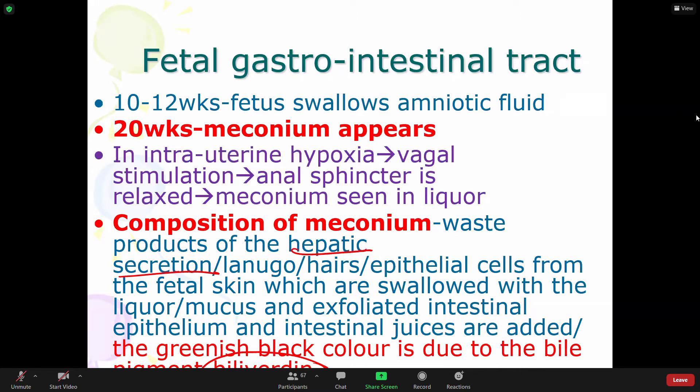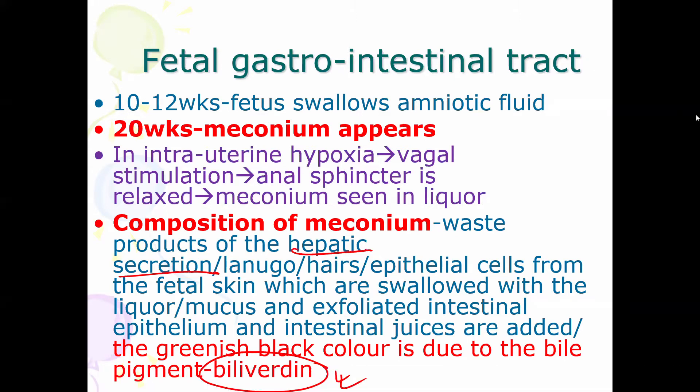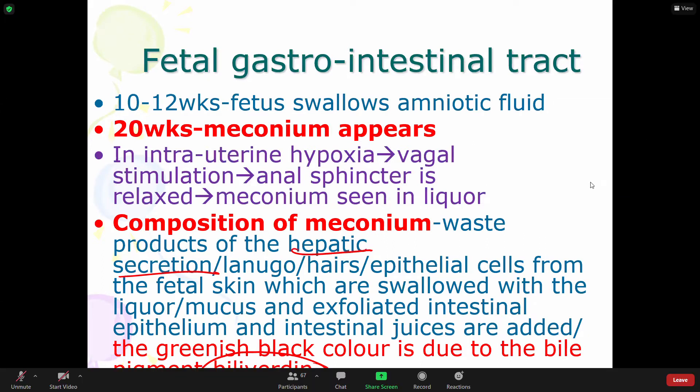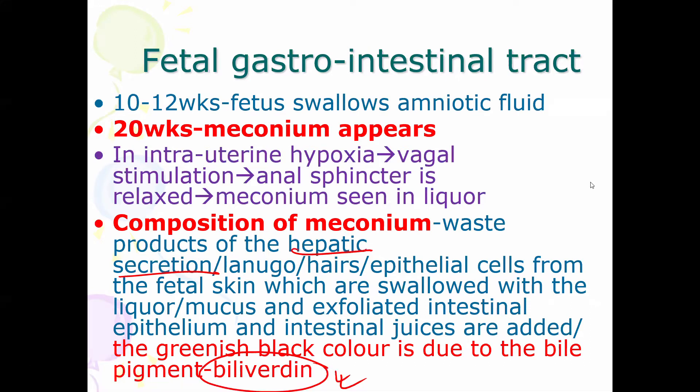Swallowing acts like an induction for the formation of lungs as well as the GI tract. By 20 weeks, meconium starts — meconium appears in the GI tract. Basically, this is the fetal first stool.